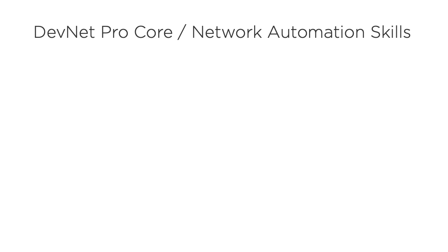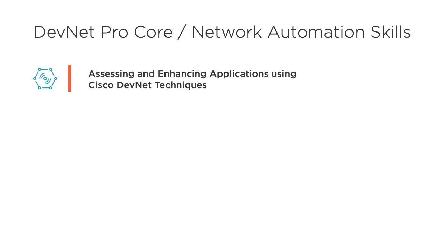The next assessment combines many DevNet professional core or DevCore flavored topics with advanced network automation. This first course builds on your existing software knowledge. It covers things like different database types and when you use different databases, different architectural styles like monolithic versus microservices. I use SQLAlchemy to add MySQL support to the Flask app from the previous learning path, then deploy it to a Kubernetes cluster using continuous deployment. Pretty hardcore stuff.